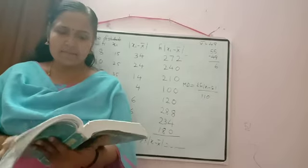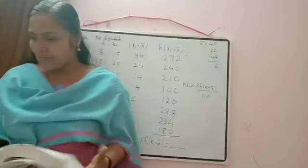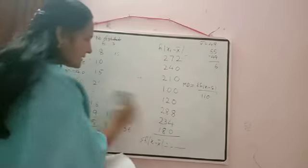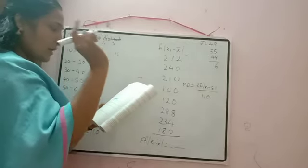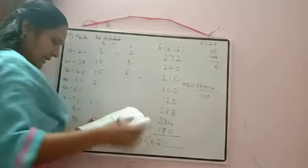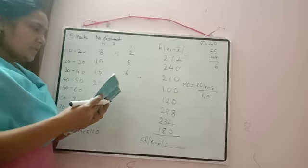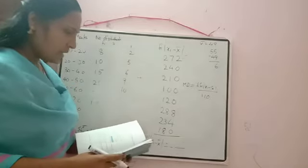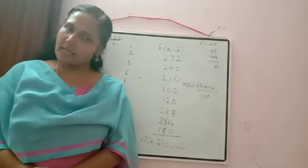I hope these questions are clear. Write down your homework: Exercise 15.1. You have to calculate the mean deviation about mean only. Question numbers: 1, 2, 5, 6, 9, and 10. Do these questions, and in case of any doubt you can ask. Thank you.